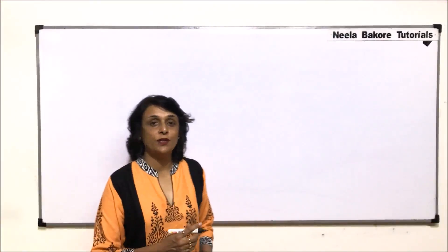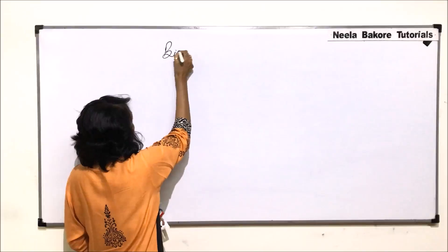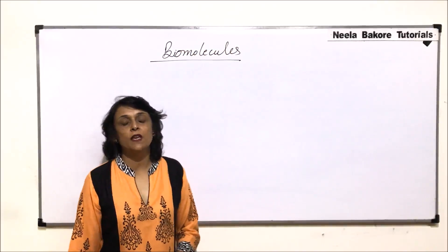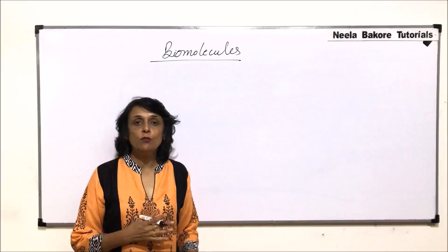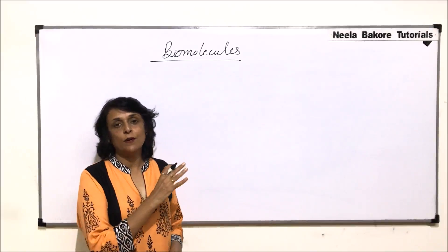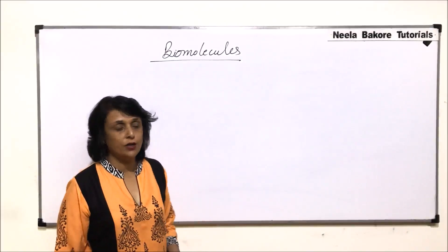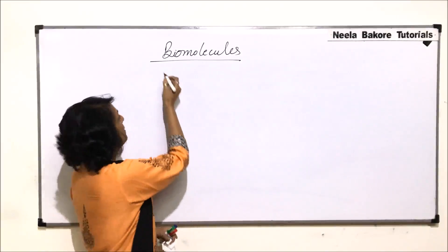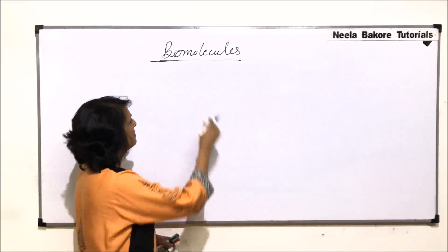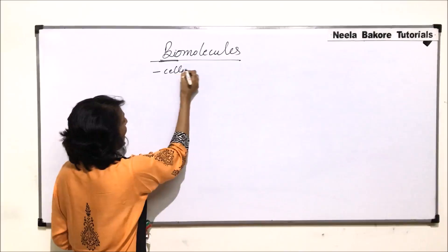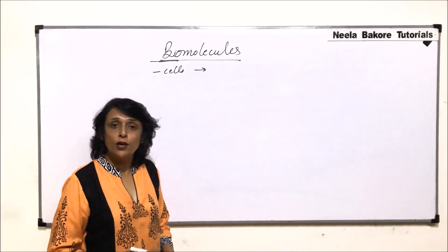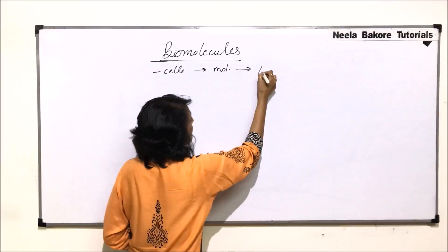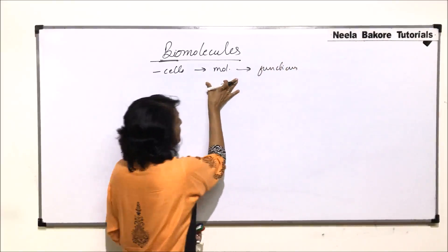We are starting with a new chapter on biomolecules. First we will understand what exactly we are going to study in this chapter, because biomolecules is a wide topic. We'll have a brief introduction first and then take up individual biomolecules. The term biomolecules refers to the molecules which are present in living systems. All cells have various types of molecules — simple or complex — which perform various functions.